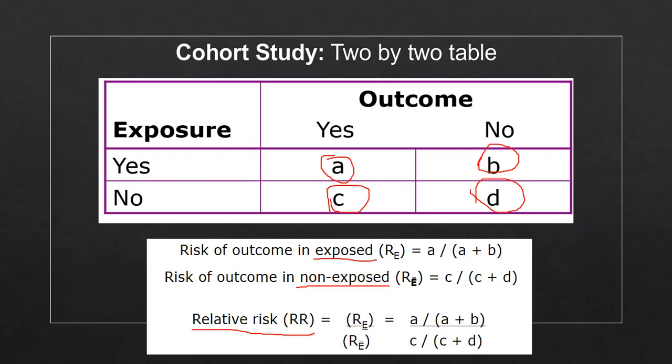And then C, right here, divided by C plus D is equal to the risk of outcome in non-exposed group.